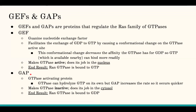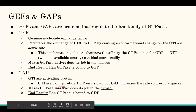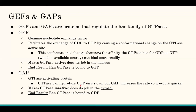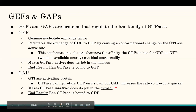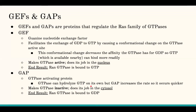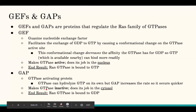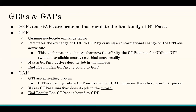GAP stands for GTPase activating protein, and it does the opposite of GEF. Whereas GEF exchanges GDP to GTP, GAP helps hydrolyze GTP — GTPases can hydrolyze GTP on their own, going from triphosphate to diphosphate, but they do it too slowly. GAP helps increase the rate of hydrolysis so the whole process occurs faster. GAP goes in and helps GTPase hydrolyze GTP to GDP faster, making the GTPase inactive. This occurs in the cytosol. The end result of GAP is that the GTPase is back to being bound to GDP.